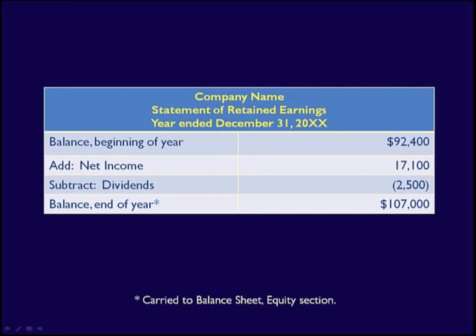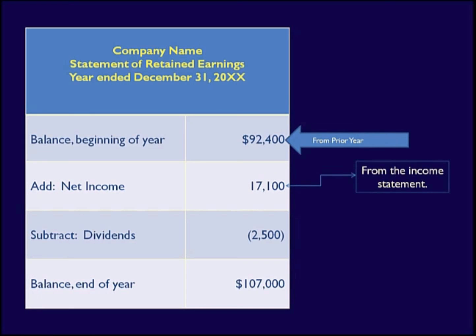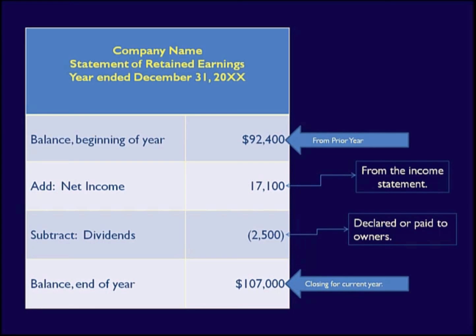Let's summarize what we learned. The opening balance for retained earnings comes from the prior year's statement of retained earnings. Net income comes from the bottom of the income statement. Dividends are what has been either declared or paid to the owners of the business, also called shareholders. The ending balance is the amount that will be carried to the equity section of the balance sheet, and this amount will become the opening balance at the top of the statement of retained earnings next year.